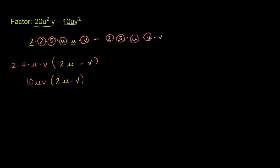Let me do that right now. So we could say that this is the same thing. Another way of approaching it, you could have said that this is the same thing as the largest number that divides both of these is 10uv, and that's going to be times 20u squared v over 10uv minus this thing, 10uv squared over 10uv.